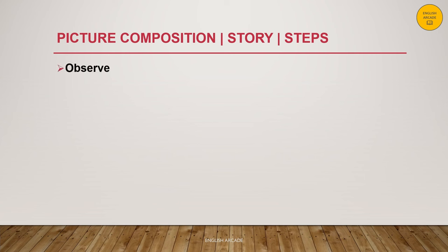Let us now understand the steps required to write a story for a picture composition. Observe the picture very carefully. Think of appropriate setting for the story. Setting would include both place and time. That is, where does the story take place and what time of the day or time of the year it is. Is it set in the present times? Does it take us to the past? So you should include all that in your story.